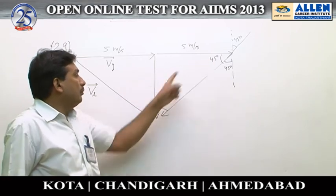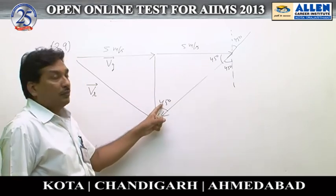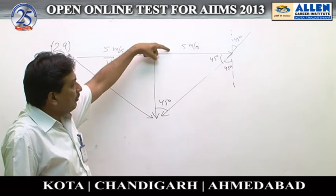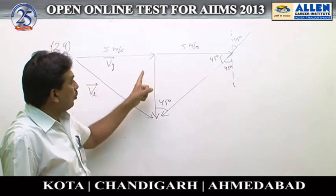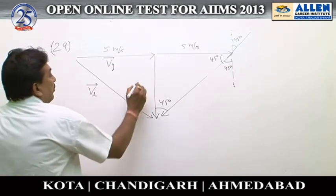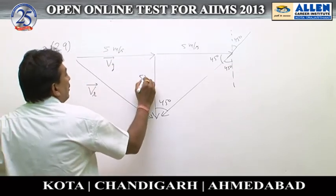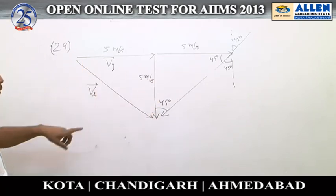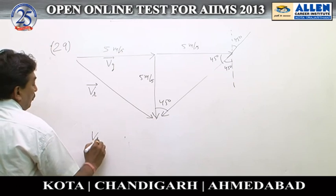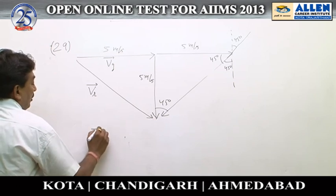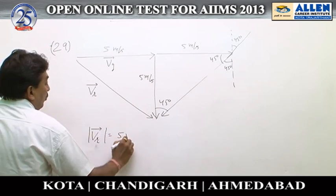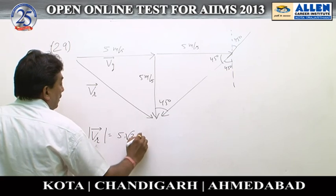Since both angles are the same, if this velocity component is 5 meters per second, the other component will also be 5 meters per second. From this diagram, we can conclude the magnitude of the actual velocity of rain is 5√2 meters per second. Option 2 is the correct answer.